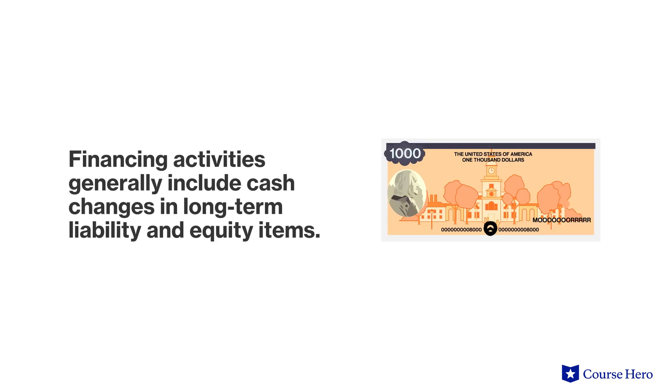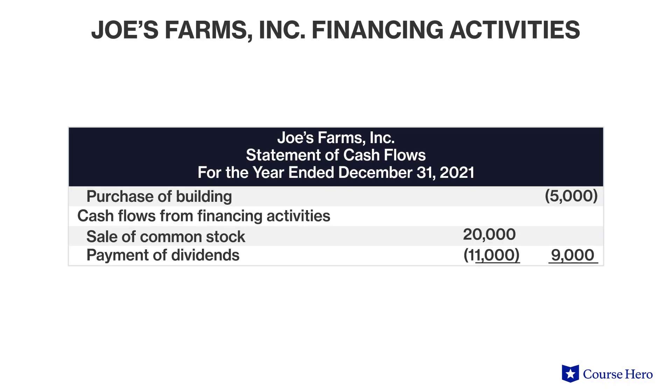Financing activities are determined next and generally include cash changes in long-term liability and equity items. Financing cash inflows include cash from the sale of equity securities and cash from the issuance of debt, such as notes and bonds. Financing cash outflows include cash paid to stockholders in the form of dividends and cash used to redeem long-term debt or reacquire stock. For this specific company, financing activities included $20,000 of cash received from the sale of common stock and $11,000 of cash paid to shareholders in dividends.